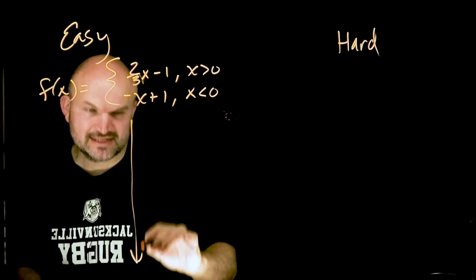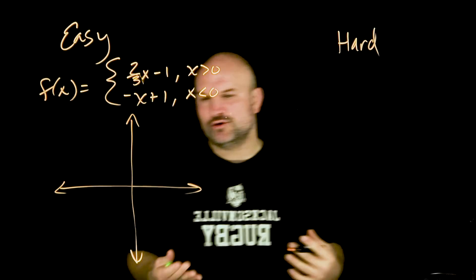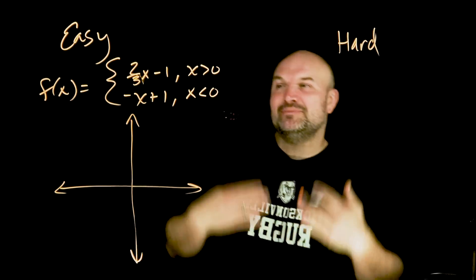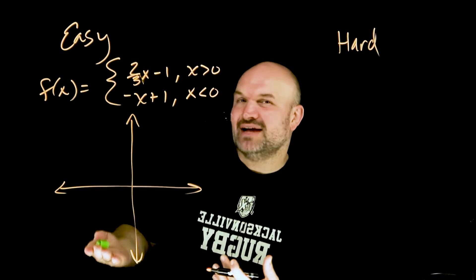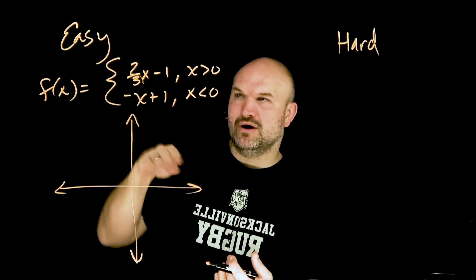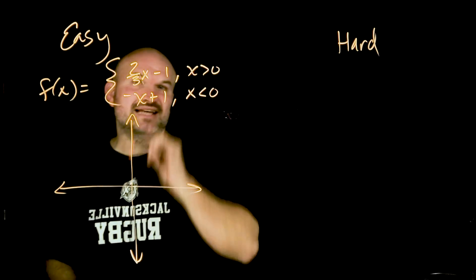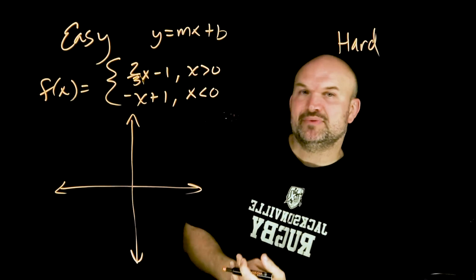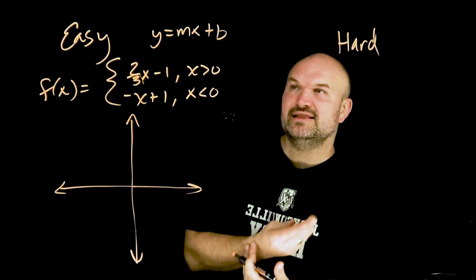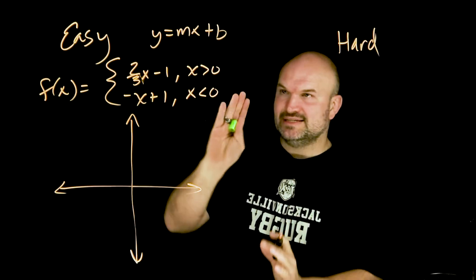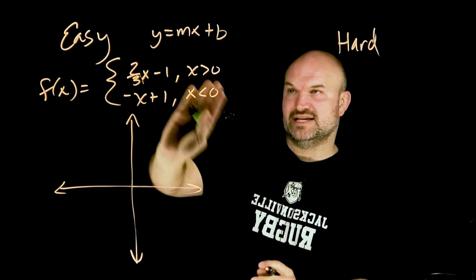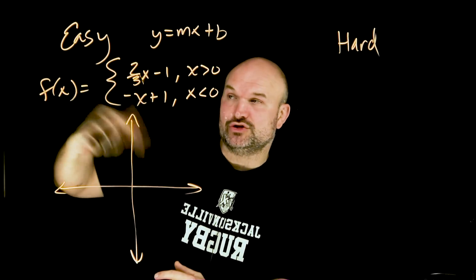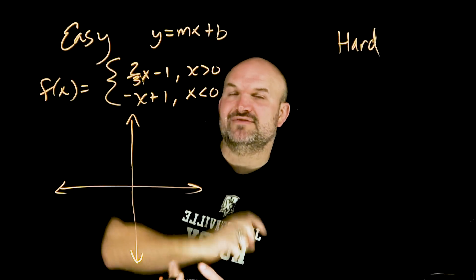I chose two linear equations for the easy example because most students at the level of graphing piecewise functions should know how to graph a linear equation. In this first piece, we have two-thirds x minus one. Remember y equals mx plus b — two-thirds is the slope and negative one is the y-intercept. Before graphing, we need to understand the domain restriction: this says all x values greater than zero, so this equation only applies for positive x values.